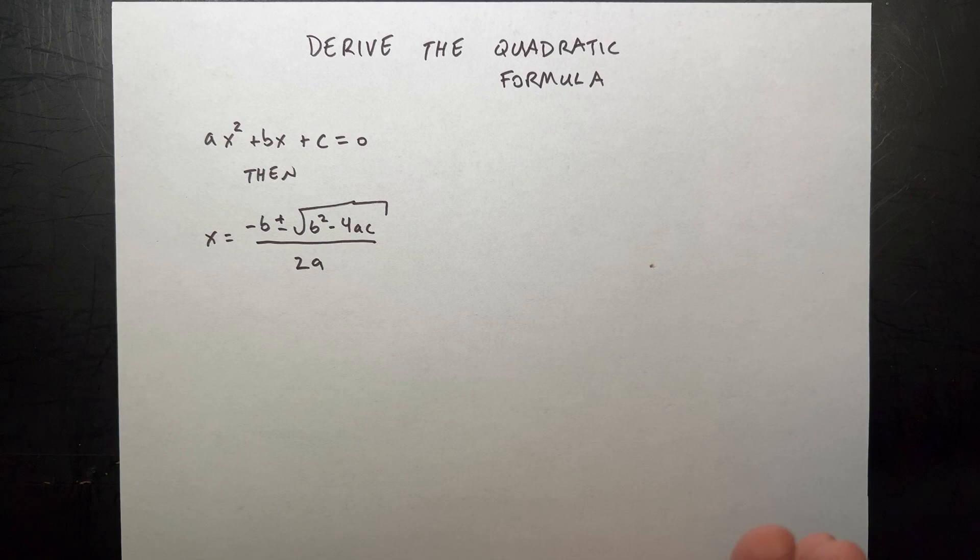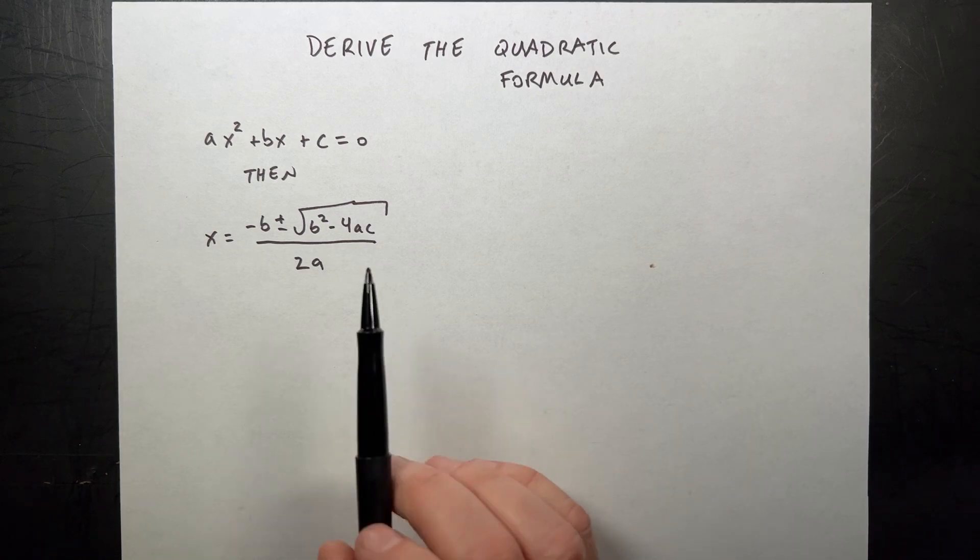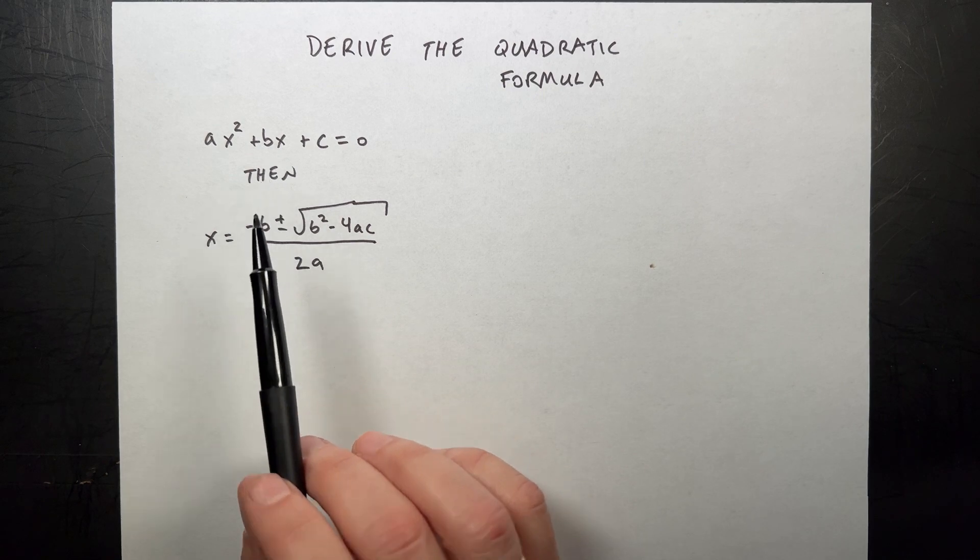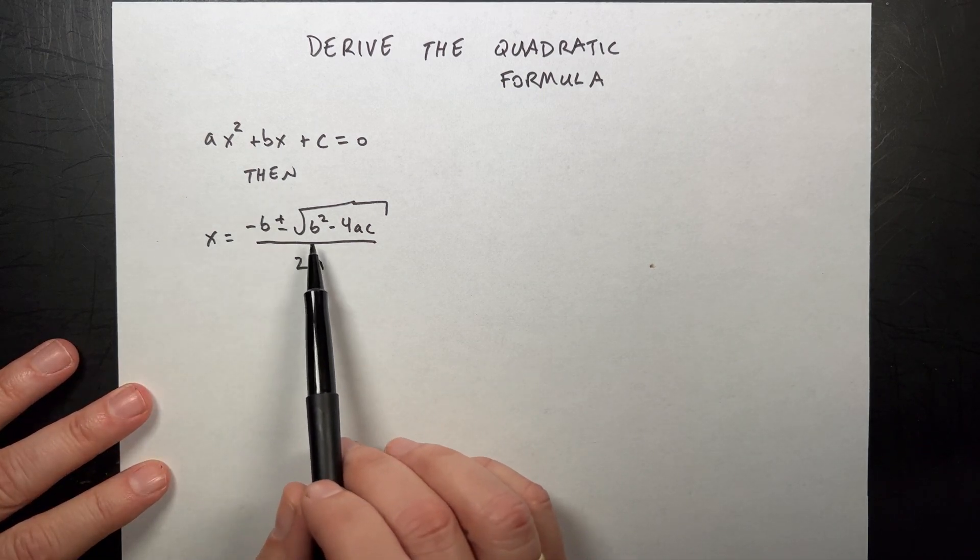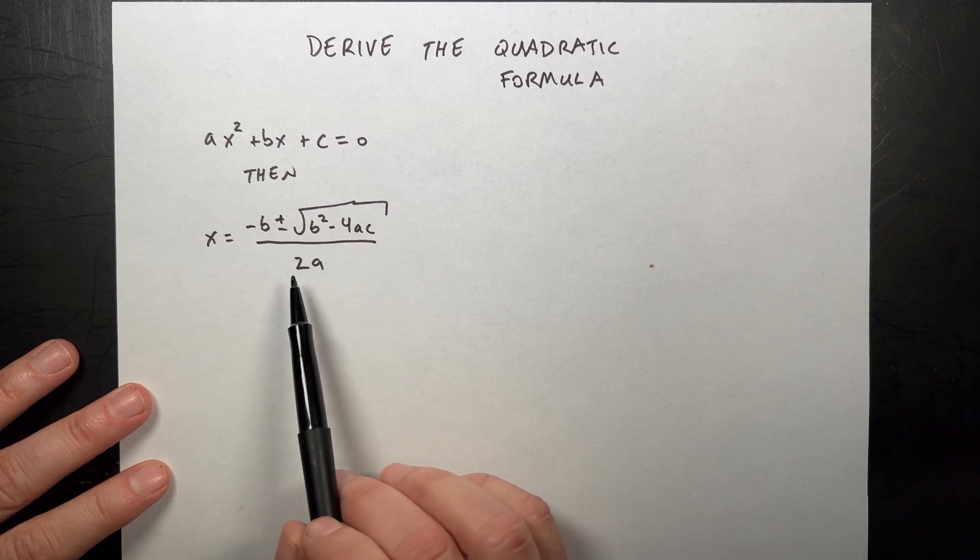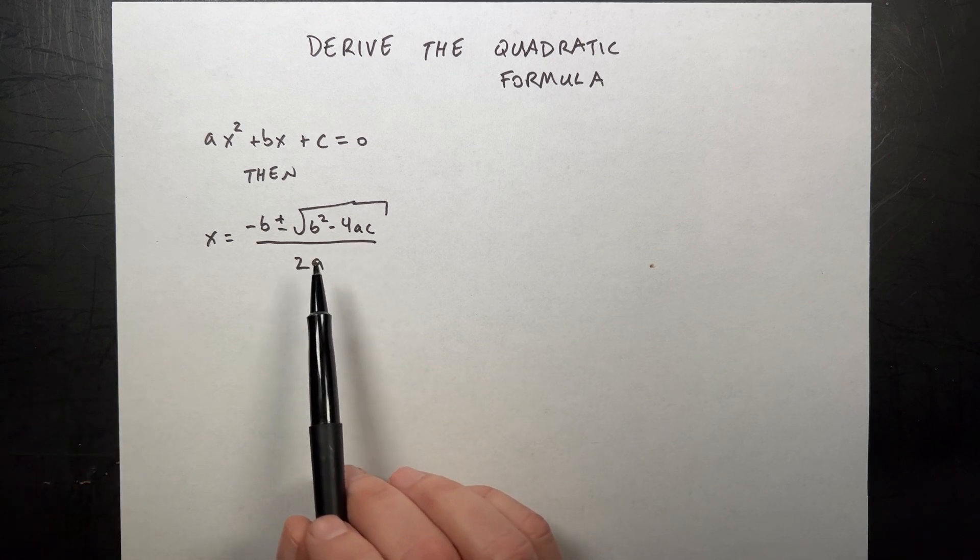It doesn't have to be x's, it could be time, it could be anything. If I have it in that form, then I can solve for x and x would follow the quadratic formula: negative b plus or minus square root of b squared minus 4ac all over 2a. But where does that come from?